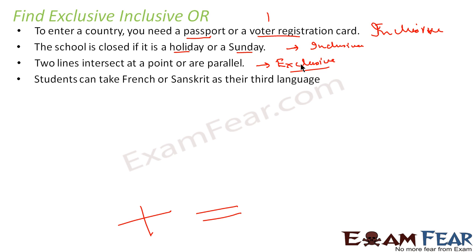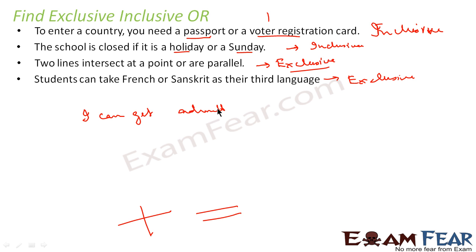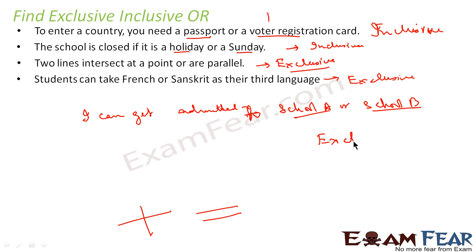A student can take French or Sanskrit as their third language. Here, a student can take either French or Sanskrit — they can't take both as their third language. So this is also an example of exclusive. Similarly, I can get admitted to school A or school B for class 10. I can't take admission in two schools — it's legally incorrect. I can take admission only in one school, either school A or school B. So this is also an exclusive statement.